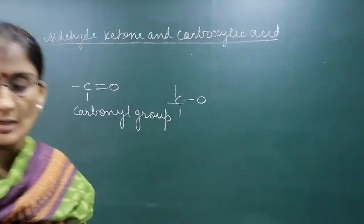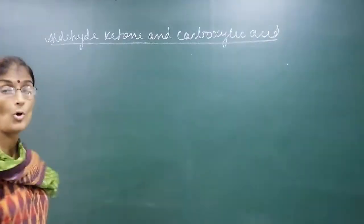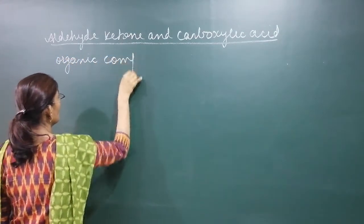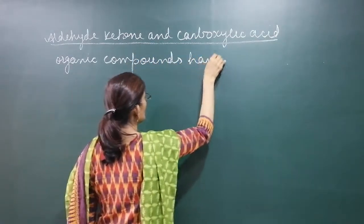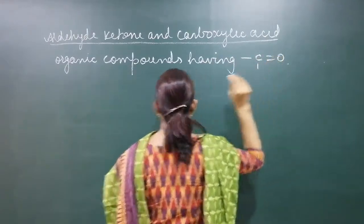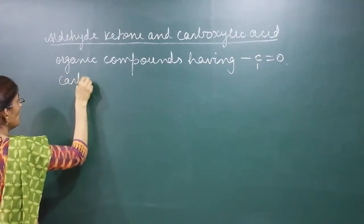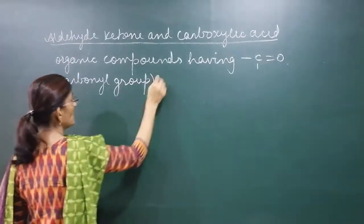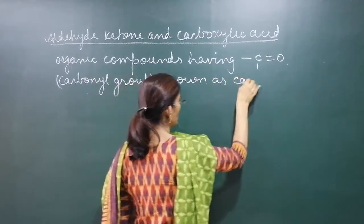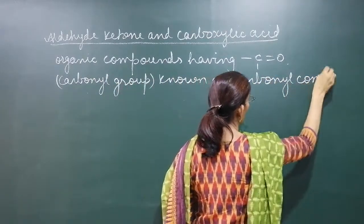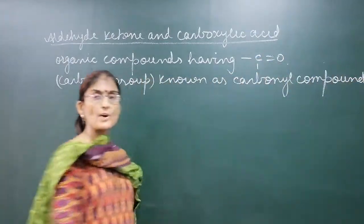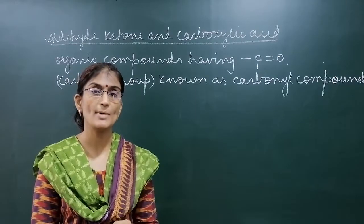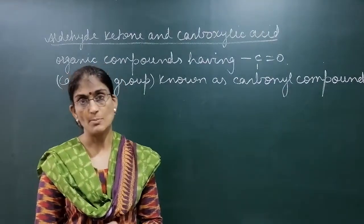This group is called the carbonyl group, where carbon and oxygen are joined by a double bond, and all compounds having such a group are known as carbonyl compounds. So, what are carbonyl compounds? Organic compounds in which the C=O group — called the carbonyl group — is present. Reduction of a carbonyl compound gives an alcohol. All compounds in which carbon and oxygen are joined by a double bond are known as carbonyl compounds.